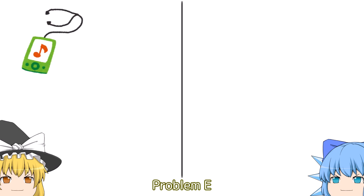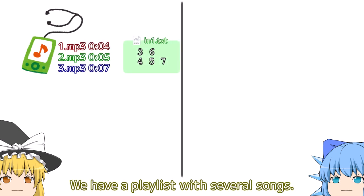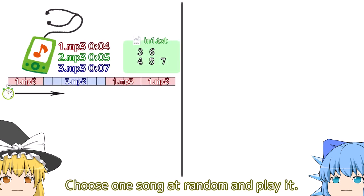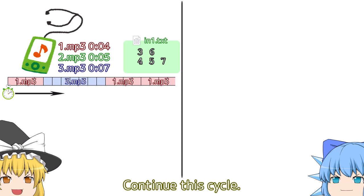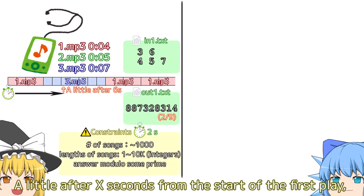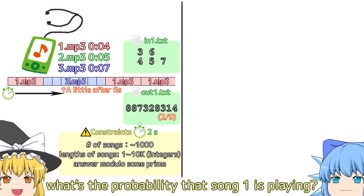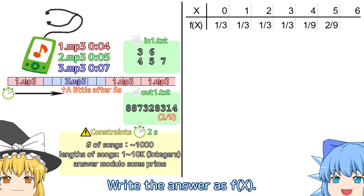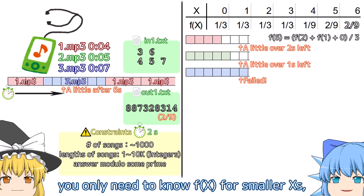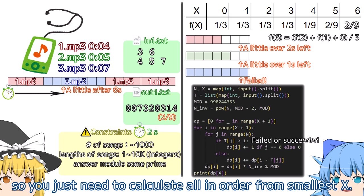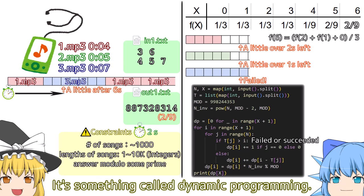Problem E. We have a playlist with several songs. Choose one song at random and play it. Then after it finishes, play another one at random. Continue this cycle. A little after X seconds from the start of the first play, what's the probability that song 1 is playing? Write the answer as F(X). Once you decide on the first song to play, you only need to know F(X) for smaller X's. So you just need to calculate all in order from smallest X — it's something called dynamic programming.